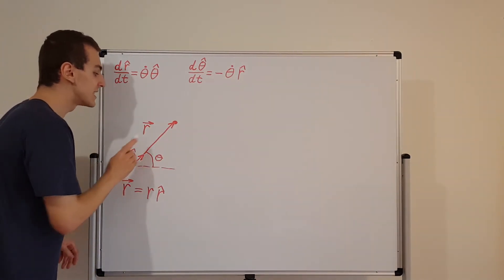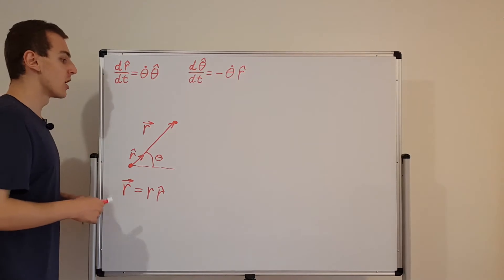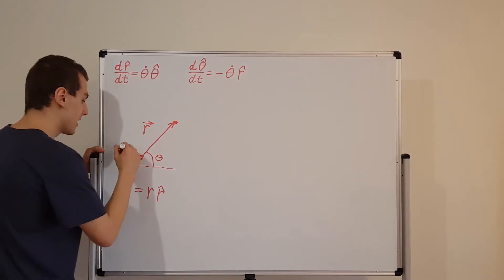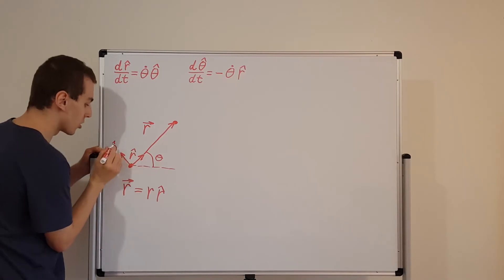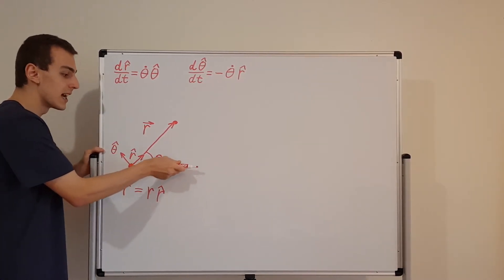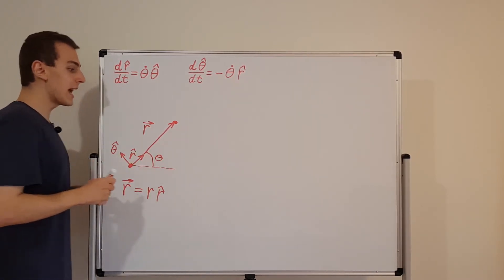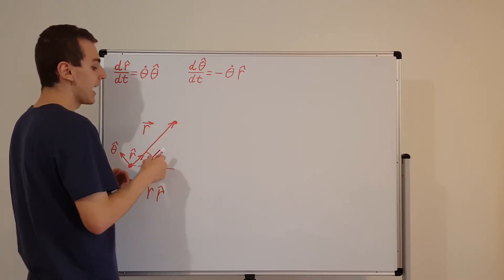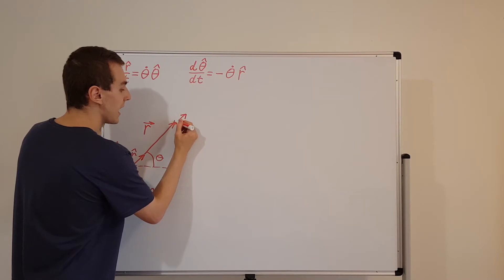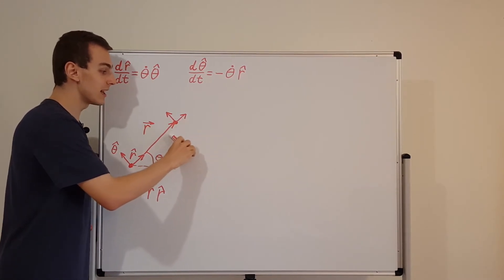What we want to do is study how the position changes — the time derivative of the position vector, which is the velocity vector. If we draw both unit vectors, there's a radial direction (r̂) and a perpendicular direction (θ̂), which points in the direction of increasing theta. So the velocity will have a radial component and a tangential component.